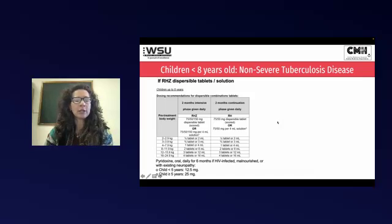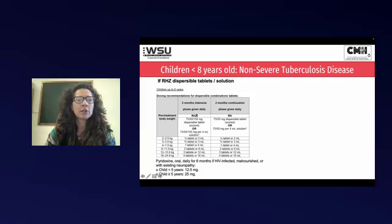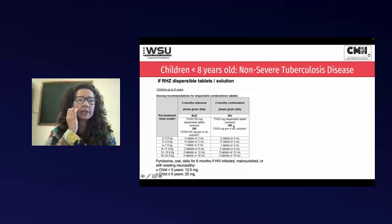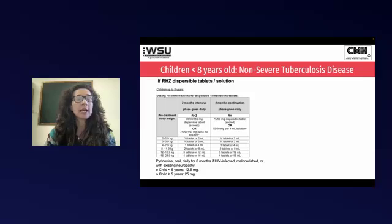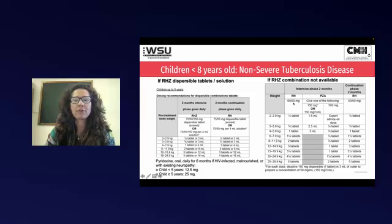Looking at the dosing charts in your EML, you've got to watch out that you use the right chart depending on the preparation you have. Our clinics now have the RHZ preparation, either as a dispersible tablet or as a solution — that's your rifampicin, INH, PZA in one tablet. There's also an RH 75/50 combination, also available as a dispersible tablet or solution, which is very nice and easy to use for children. If you don't have the RHZ or the new 75/50 combinations, then we're back to the good old Rifinar 60/60 tablet, with a whole mechanism of how you mix that into water — and obviously that will be a very different dosing chart that you'll be following.